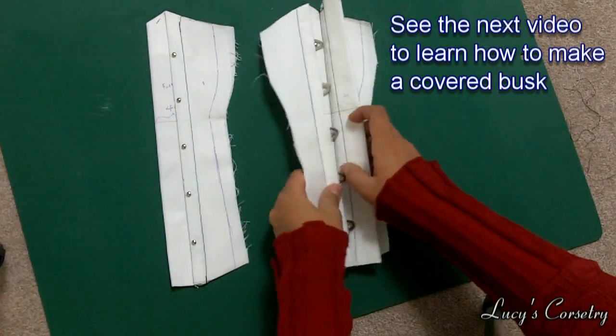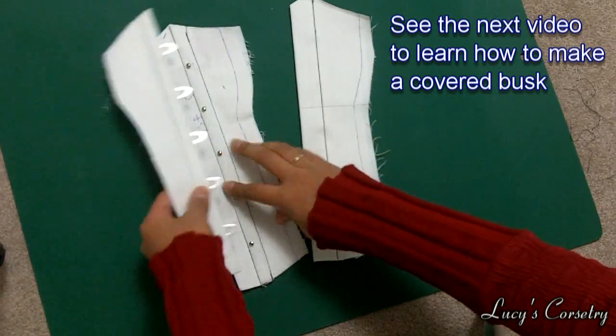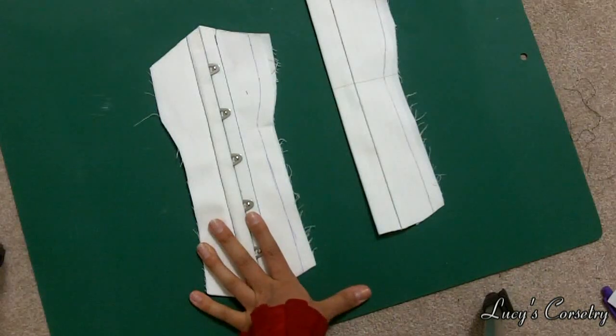And there you have it, two different results. How to make a flap over top of the busk hiding it or how to make a boned underbusk here using the same technique. And I will see you in a few days for the next video. Bye!